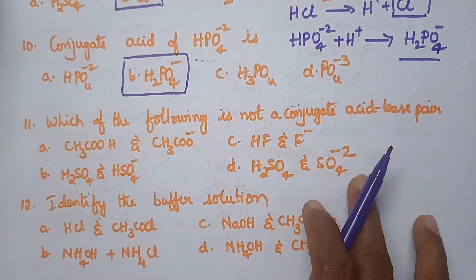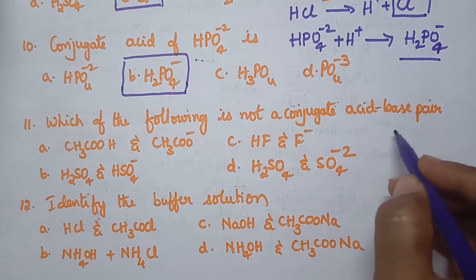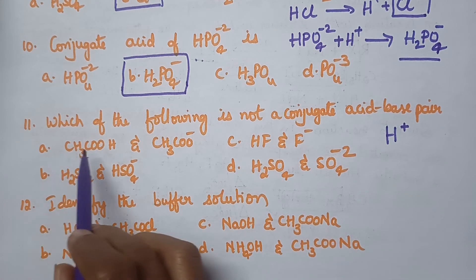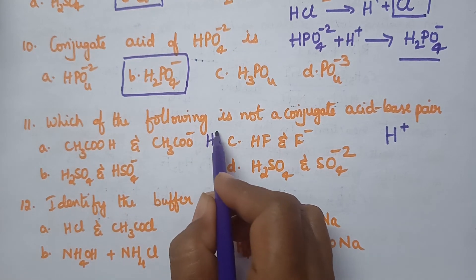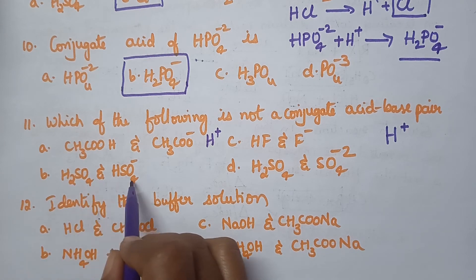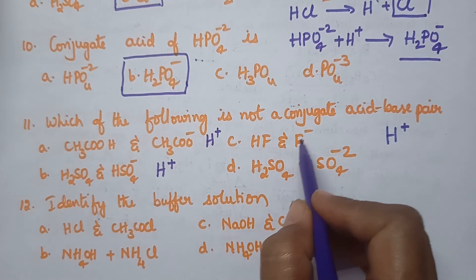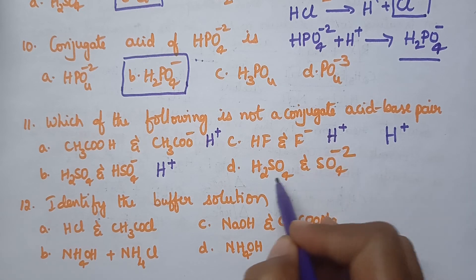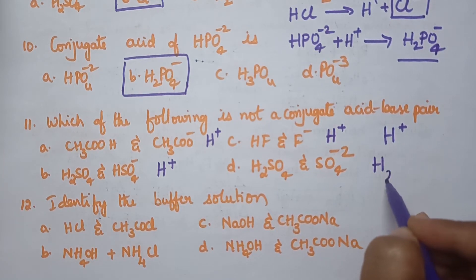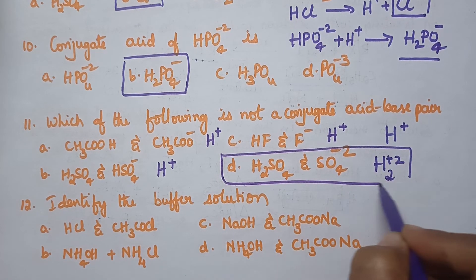Which of the following is not a conjugate acid-base pair? Remember that a conjugate acid-base pair always differs by one proton (H⁺). Option A is acetic acid and acetate — they differ by H⁺. Option B is H2PO4⁻ and HPO4²⁻ — they differ by H⁺. Option C is HF and F⁻ — they differ by H⁺. Option D does not differ by exactly one proton and is therefore not a conjugate acid-base pair. So option D is the right answer.